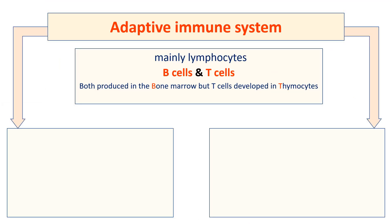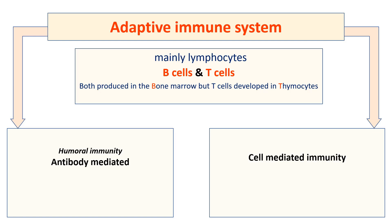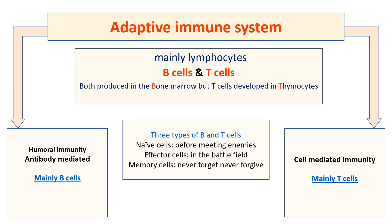Additionally, the adaptive immune system can be divided into either humoral immunity, which is mainly antibody-mediated, or cell-mediated immunity. The antibodies are produced by B cells, whereas cellular immunity is mediated mainly by T cells. Here is a comprehensive view of the adaptive immune system.